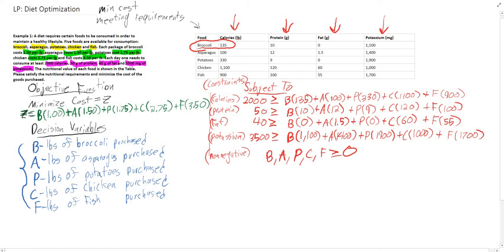That should be everything for a diet optimization problem. We'll have another one in the next video, but this is the basic gist: we will be minimizing cost while meeting the requirements given in the word problem. Thank you.